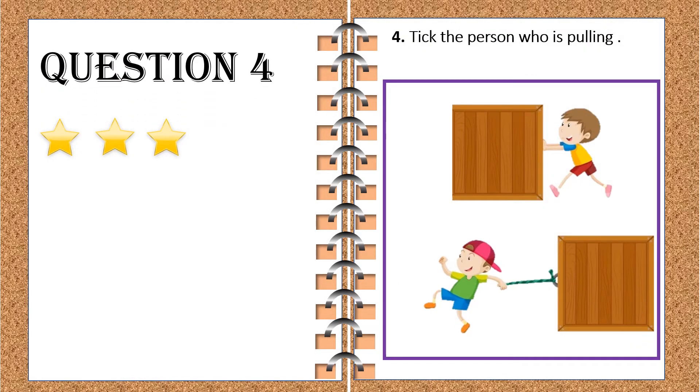Let's move on to our next question. The next question is, tick the person who is pulling. I'm sure you must have got it. That's right. The picture on the bottom side is showing a boy pulling the box. That's correct. I got now four stars.